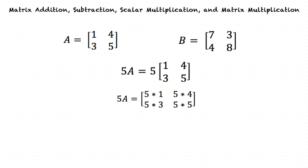This will look like 5A equal to Row 1: 5 times 1, 5 times 4; Row 2: 5 times 3, and 5 times 5. We now solve to get 5A equal to Row 1: 5, 20; Row 2: 15, 25. This is the final answer of the scalar 5 times Matrix A.